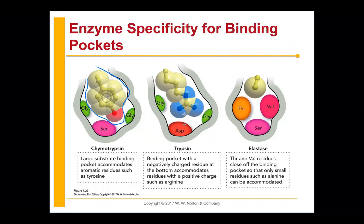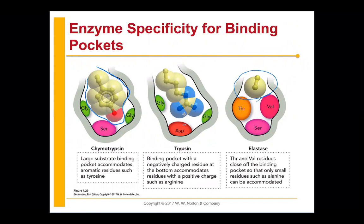Look at elastase. Elastase is an enzyme that works on the protein elastin, which is really rich in glycine and alanine residues. In elastase, we see a tiny, tiny binding pocket — so only really small residues like alanine and glycine can be accommodated in the active site, and those are the only substrates that actually get cleaved. The binding pocket tells you the specificity of what substrates that enzyme can work on.